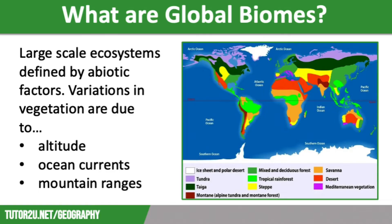We're going to start off by defining what we mean by global biome. A biome is a large-scale ecosystem and its characteristics are defined by abiotic factors, which are non-living environmental factors. They are known for their dominant type of vegetation, such as the tropical rainforest or the taiga. Global biomes form broad belts following lines of latitude, because their climate is dictated by global atmospheric circulation, which we've covered in a separate video.